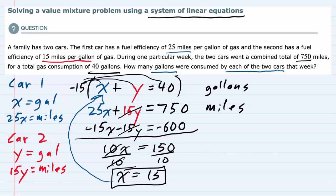I'm going to rewrite the first equation and substitute x with 15. So that's 15 plus y equals 40. To solve for y, I'll subtract 15 from both sides, leaving me y equals 25.